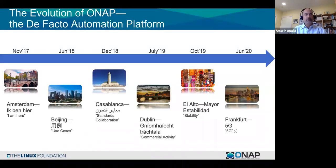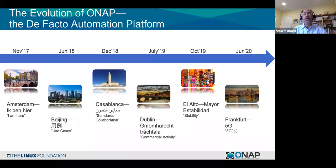This shows the evolution of ONAP. The Amsterdam release came out in November of 2017 and was more of an 'I'm here' type statement. Beijing introduced use case blueprints. Casablanca was when standards collaboration started in earnest. Dublin in July 2019 was when commercial activity really picked up. El Alto in October 2019 was a non-functional release aimed mostly at stability and security. And Frankfurt, out today, is all about 5G.